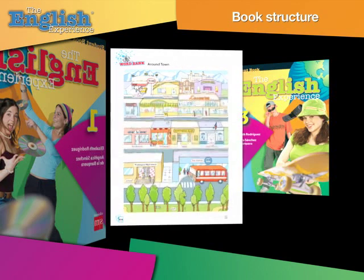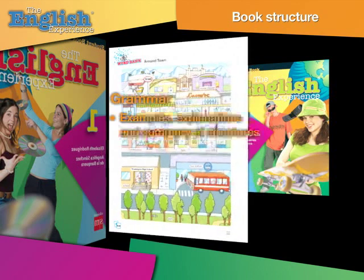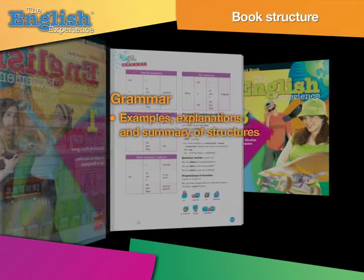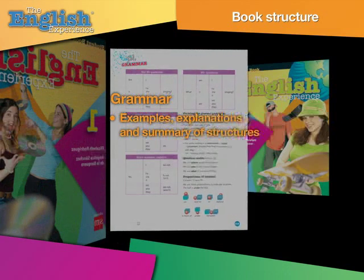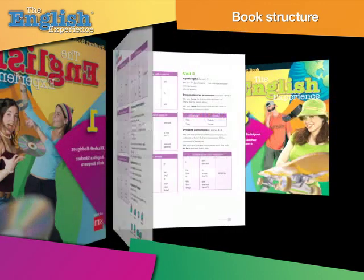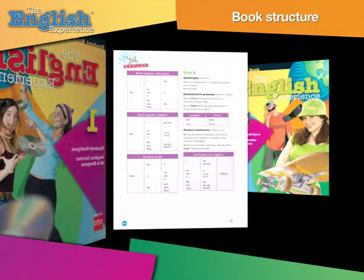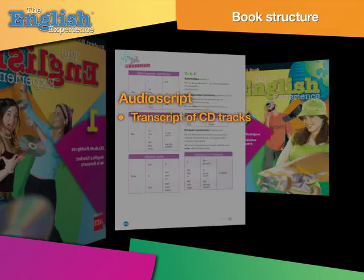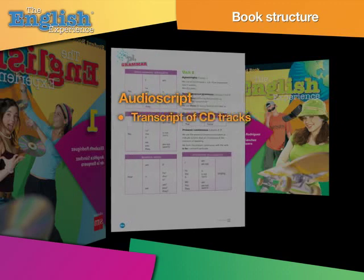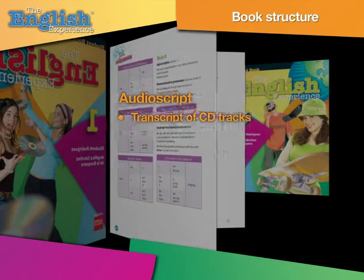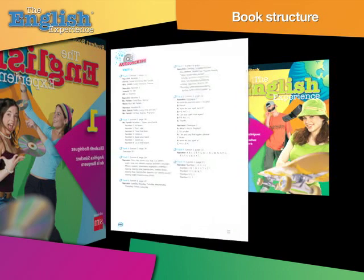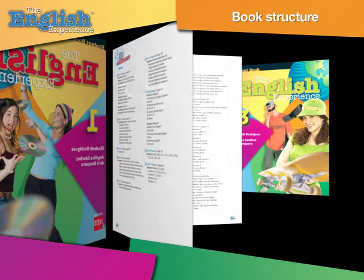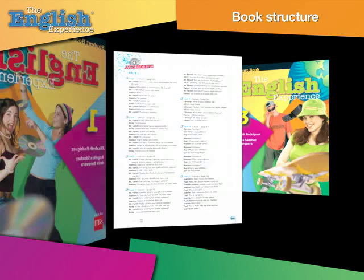The Grammar section is a useful reference guide for students. It includes examples, explanations, and a summary of the language structures covered in every unit. The Audioscript contains the transcripts for the tracks on the CD. These can help students check their answers to listening activities, observe language patterns, and improve their pronunciation.